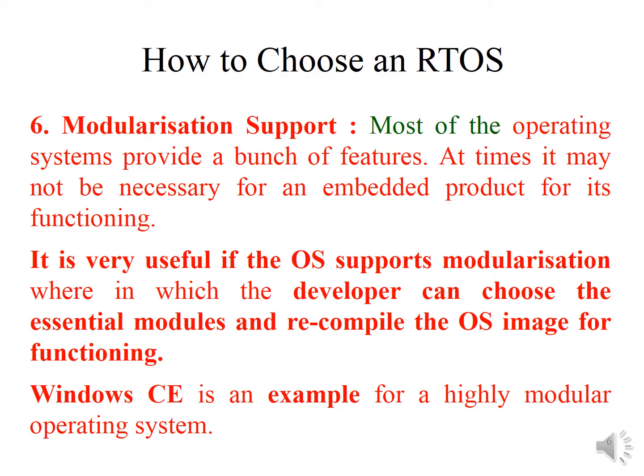This process results in the reduction in the size of the OS image, because the OS image will only contain those modules which are essential for our embedded system. Since embedded systems have limited memory, reducing the size of the OS image is very important. Windows CE is an example of a highly modular operating system.